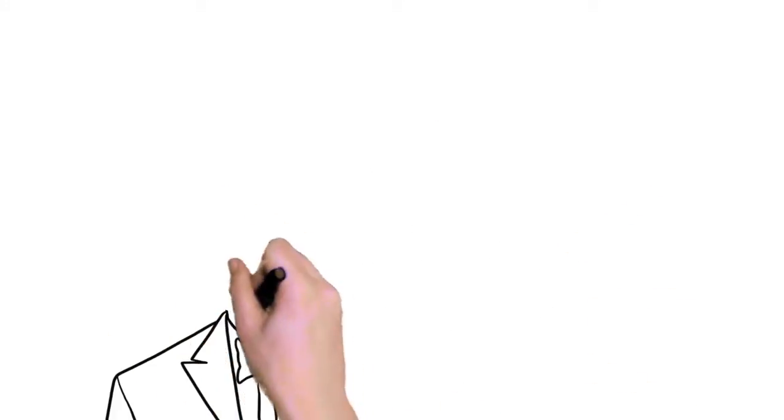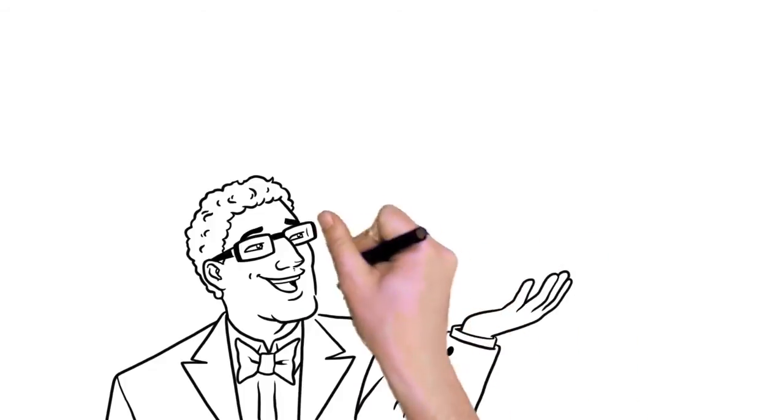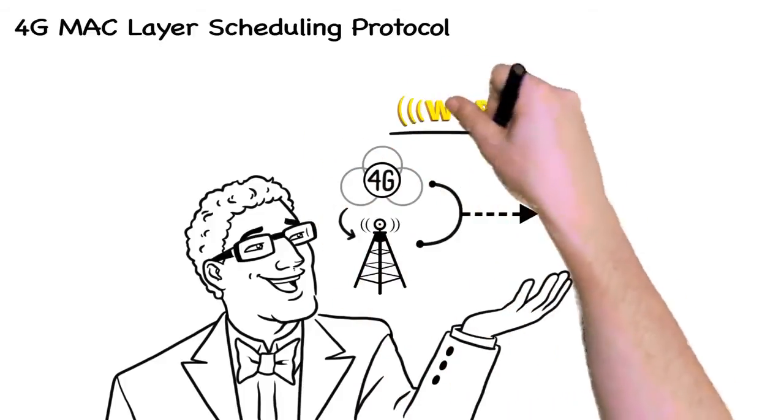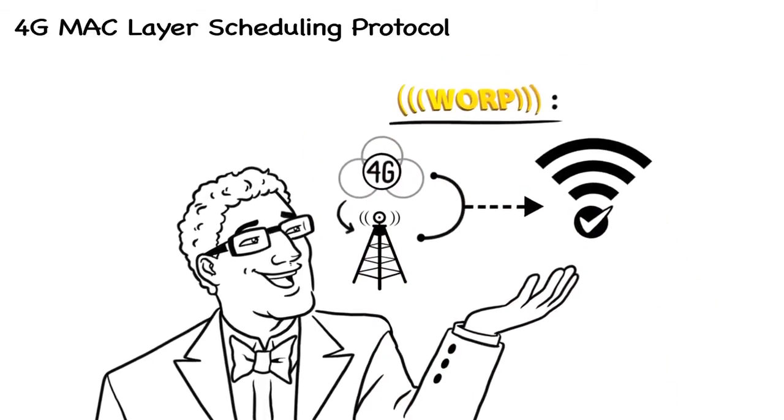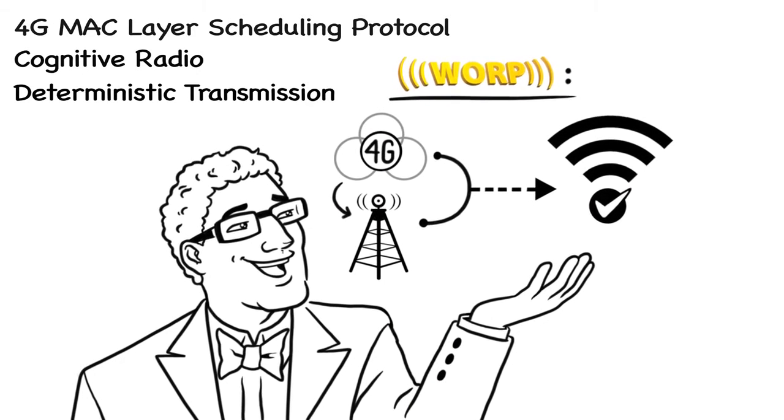How does Warp Drive deliver stunning results consistently? In high-tech terms, we took advantage of the 4G MAC layer scheduling protocol and added it to our cognitive radio with deterministic transmission for reliable connectivity.